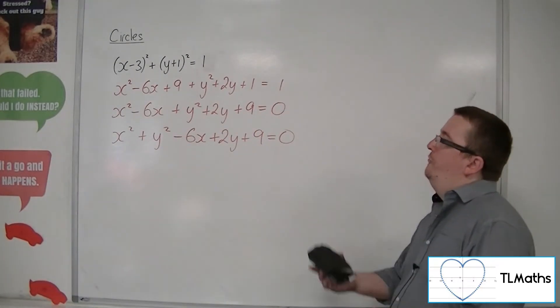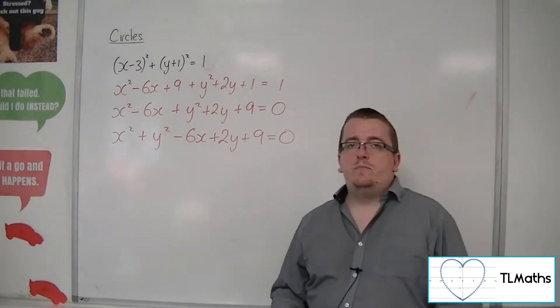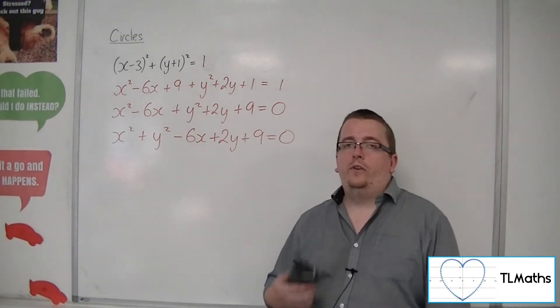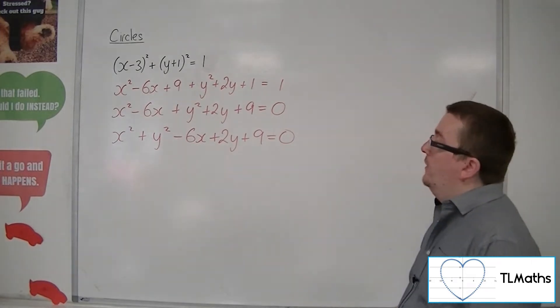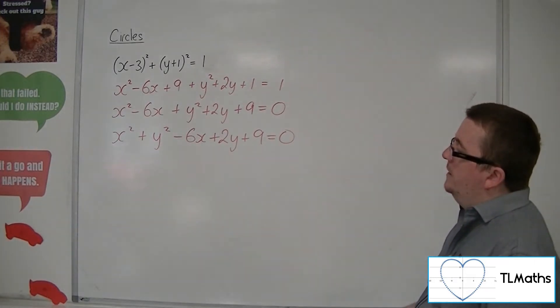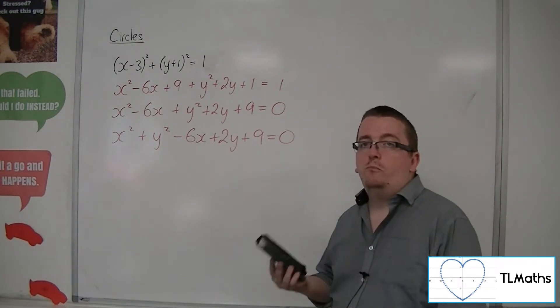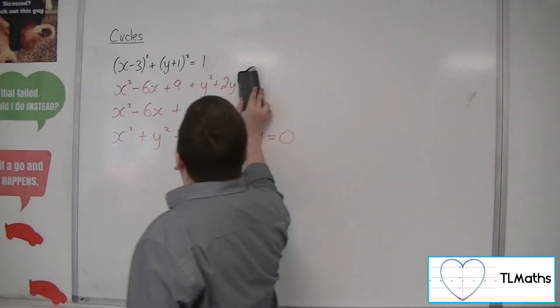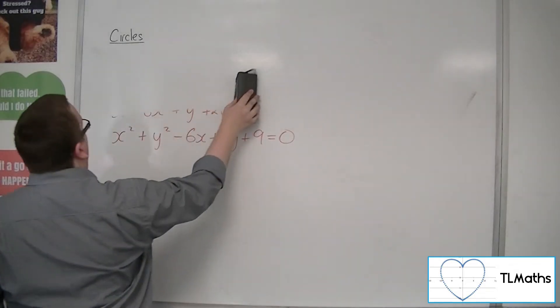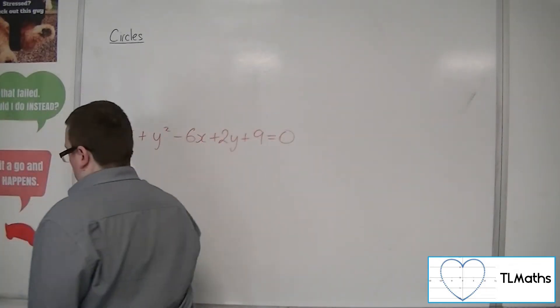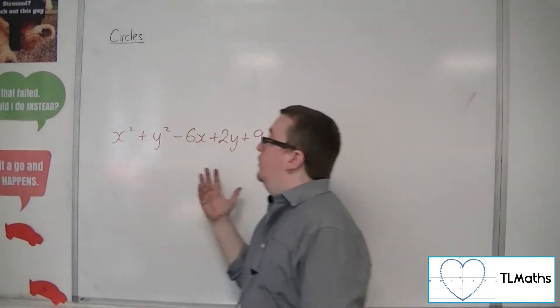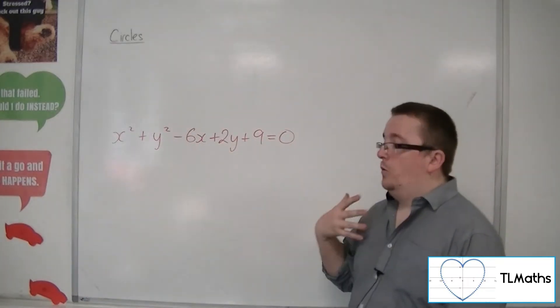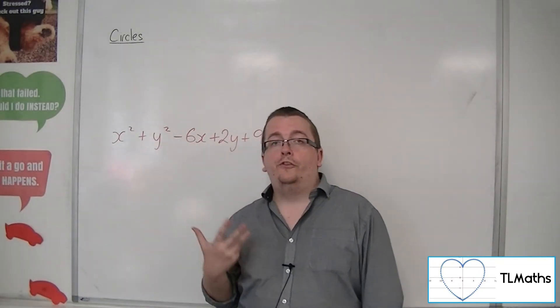From that we're not really able to tell what is the center and what is the radius of this circle. It's not in the form that is most useful to us. But sometimes that's what we're given. What happens if we have this equation and I want to know what the center and the radius of the circle is?